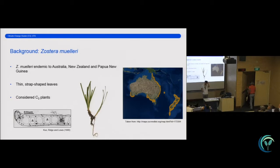So just a bit of background on the specifics of my work. Basically, I worked with Zostera muelleri, which is a closely related species of seagrass. However, this is found specifically within Australia, New Zealand, and Papua New Guinea, as you can see on the map here highlighting in the orange. They're typically characterized by their thin, strap-shaped leaves and are considered to be C3 plants.